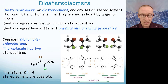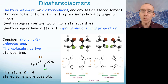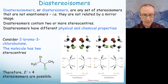When we have more than one stereogenic or chiral center in a molecule, we can have diastereomers. Diastereomers are a set of stereoisomers — different three-dimensional arrangements of the atoms in a molecule with the same connectivity — but they are not mirror images of each other. Diastereomers contain two or more stereogenic centers and they have different physical and chemical properties, making them quite different from enantiomers in many ways.